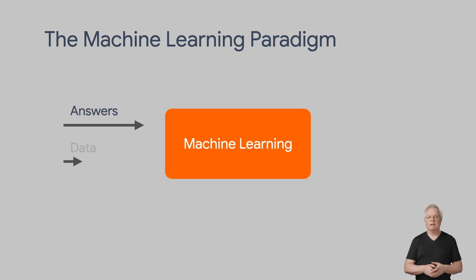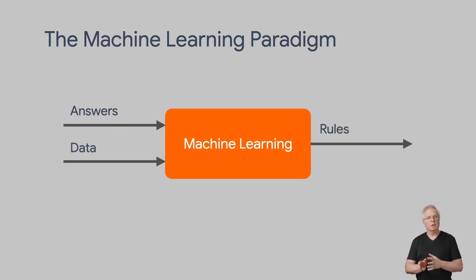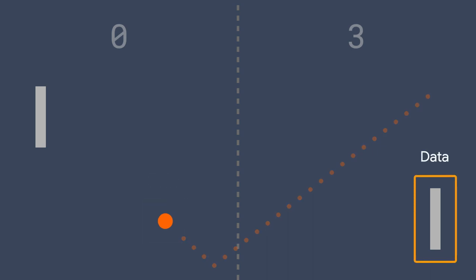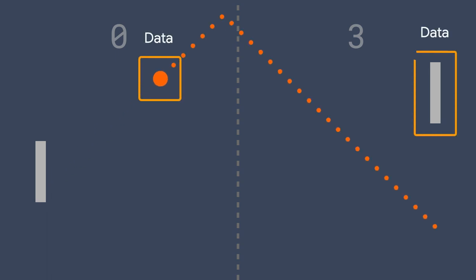Machine learning is very similar to this, but I'd just like to flip the diagram around a little bit. Instead of the rules being figured out by the programmer, what if we gave a computer the answers along with the data, and we have the computer figure out what the rules should be? For example, the data could be that the ball is in this position and the bat is in this one, and we tell the computer that the bat should move up because the ball is going to end up over here. Or based on the location and trajectory of the ball, the bat should move down. We get lots and lots of examples like this, and we have the computer figure out the patterns that determine the movement of the bat, instead of us explicitly telling it by putting those rules into code. That pattern matching is what we call machine learning.